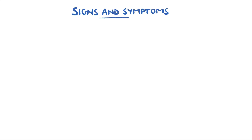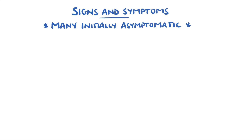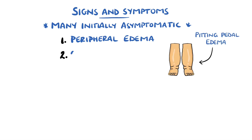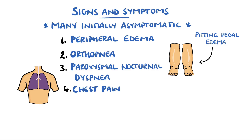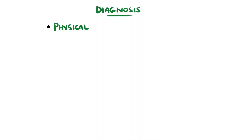Many patients are initially asymptomatic. When symptomatic, it is often the result of left ventricular systolic dysfunction, which can include peripheral edema, orthopnea — which is breathlessness when lying flat — sometimes accompanied by paroxysmal nocturnal dyspnea, meaning a sudden shortness of breath during sleep that often wakes the patient up. In some instances, patients may present with chest pain or syncope, possibly as a result of arrhythmias, and may also suffer from sudden cardiac death.